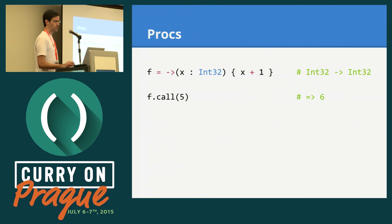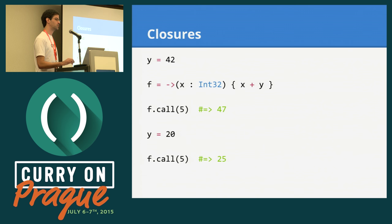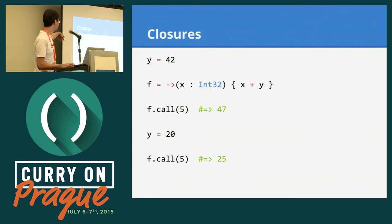We also have procs, which are typed anonymous functions. Here we have a proc that receives an integer and returns an integer — in this case you have to specify the types. These procs can also form closures, which means they can refer to variables declared outside of the proc's body. Here we are accessing the Y variable and then changing it. When we invoke it, the results change.